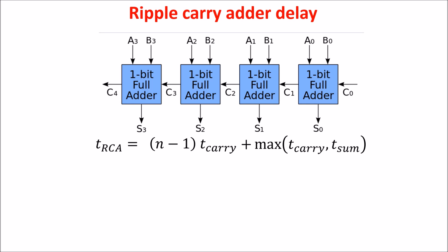So if T sum is longer than T carry, this is the formula for the total delay of the ripple carry adder. Usually, this is the formula used for the delay, but you should always see how the adder is built and derive the right formula from the circuit.